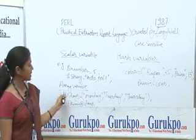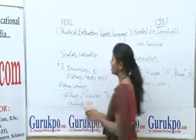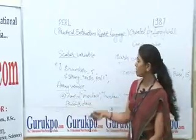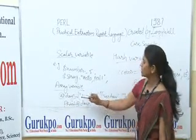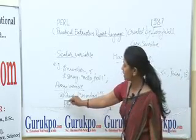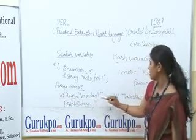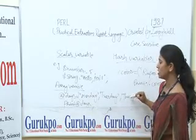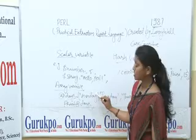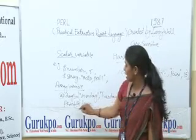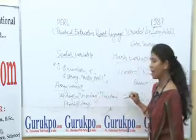Next we see array variables, which are represented by the at-the-rate sign. Array variables represent a list of elements. Here we can see that @days represents Monday, Tuesday, Thursday — that is a list of elements. To print this list of elements, we write 'print @days', and it will print Monday, Tuesday, and Thursday.